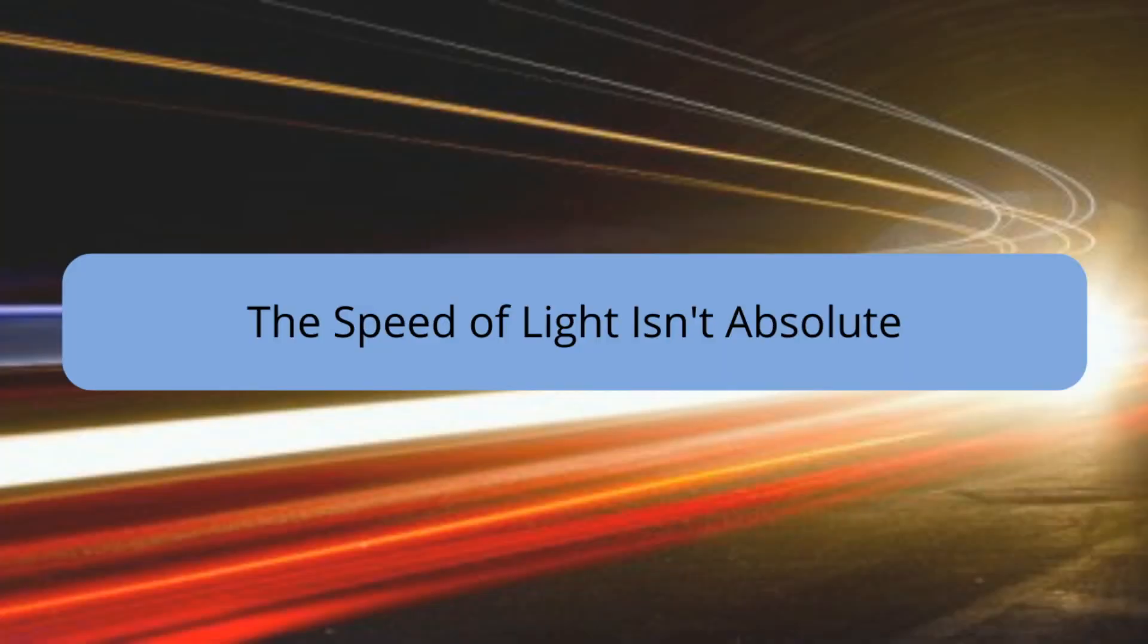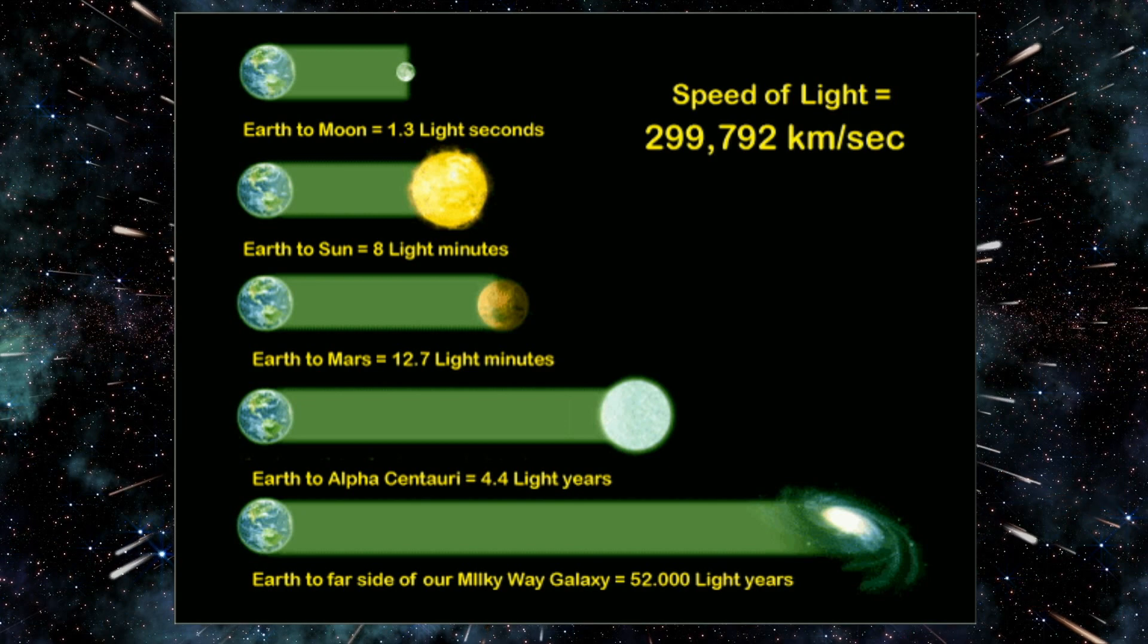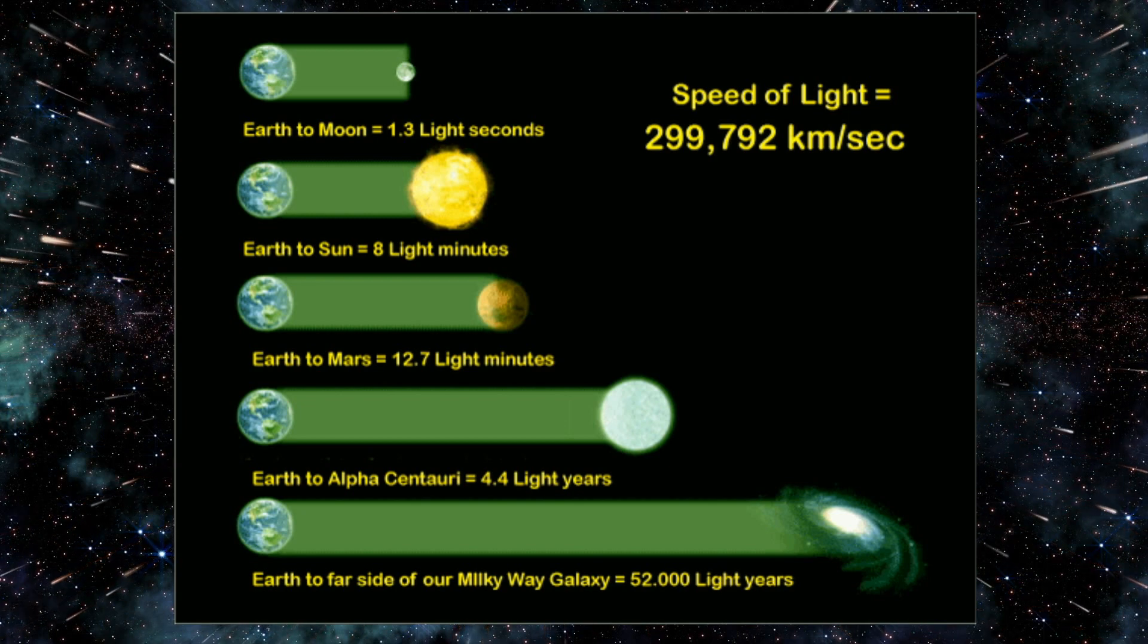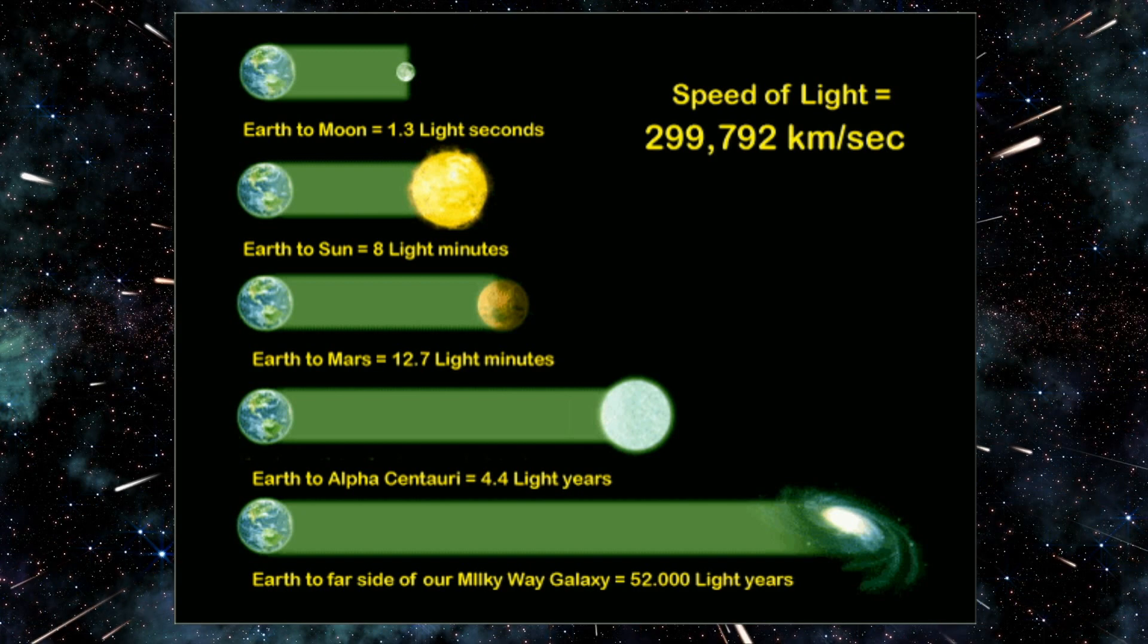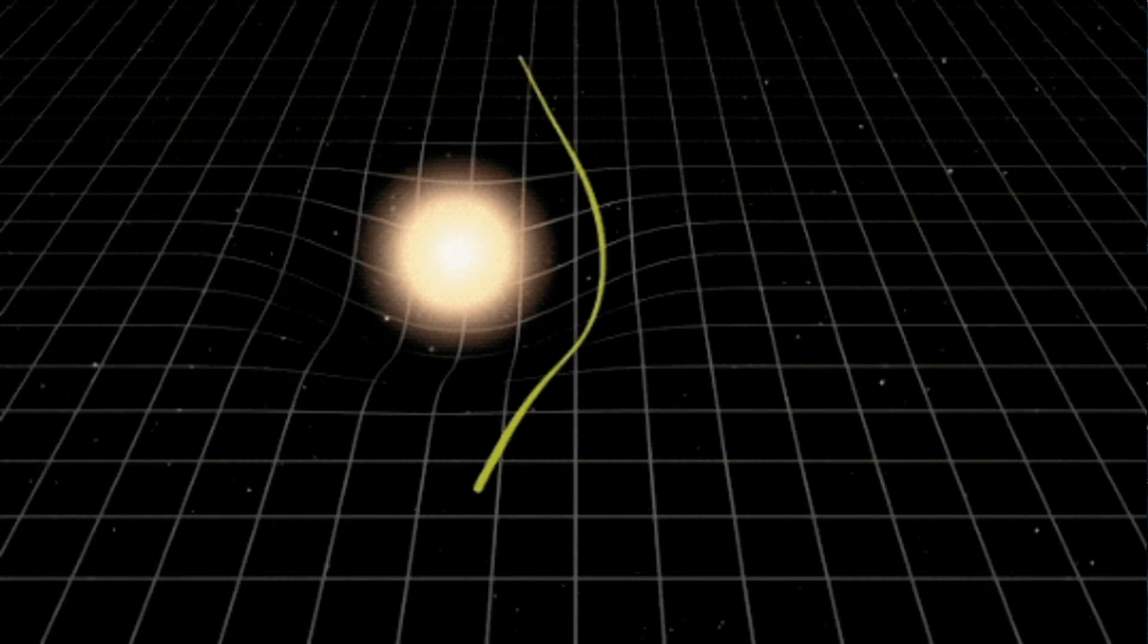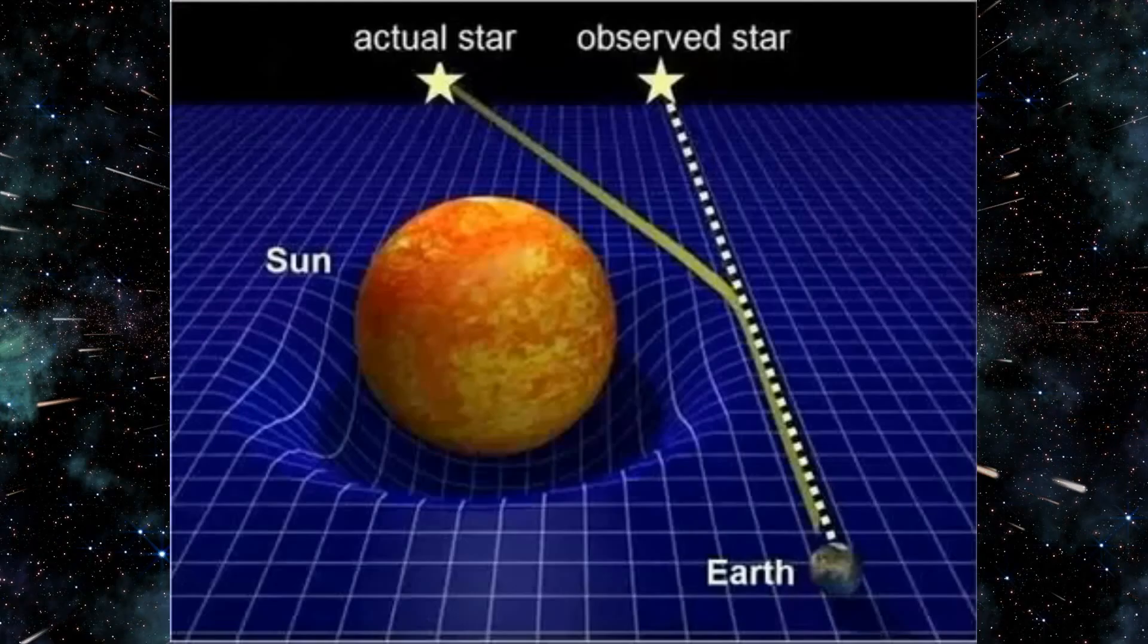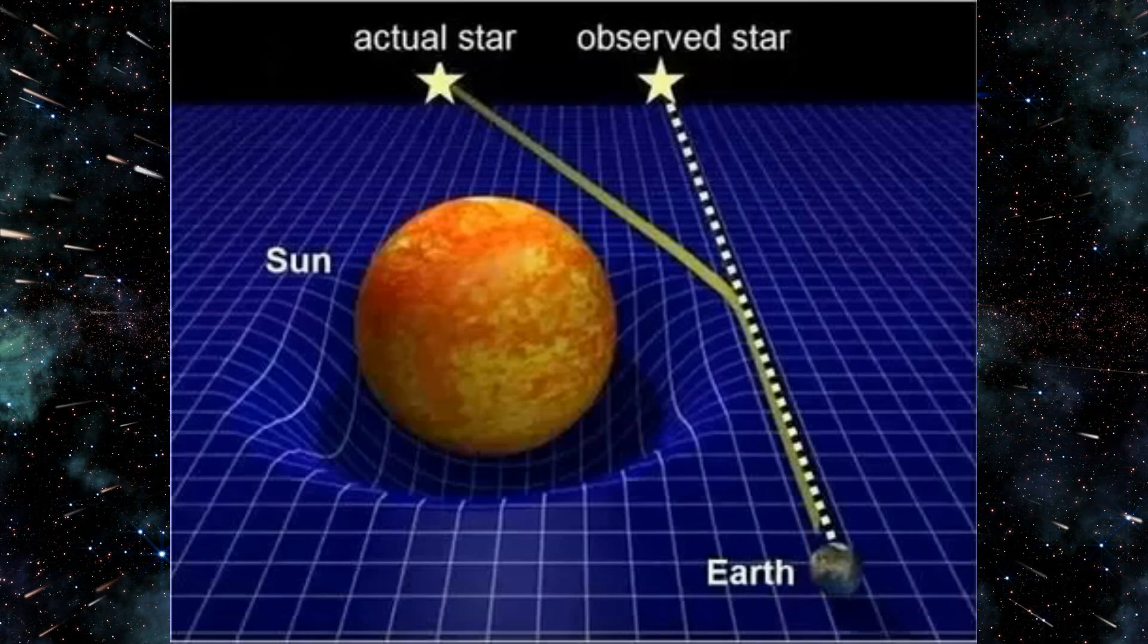The speed of light isn't absolute. While Einstein's theory of relativity established the speed of light in a vacuum as a constant, there's a nuance to consider: the speed of light isn't absolute in all situations. Here's how it works. In a perfect vacuum, empty space devoid of matter, light travels at its constant speed, which is approximately 299,792,458 meters per second. This is the baseline for light speed. However, light can interact with gravity. When light travels through a region with strong gravity, like near a massive star or black hole, its path can bend. This bending doesn't necessarily change the speed of light itself, but it affects the overall direction of its travel.